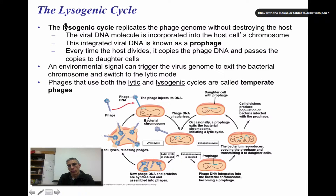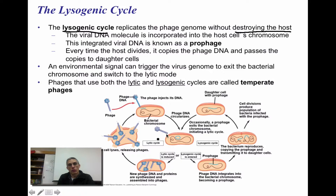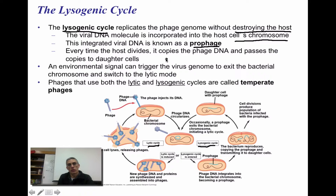The second type of cycle for these phages is called the lysogenic cycle. For these particular phages or viruses, they're going to replicate the phage genome, but they're not going to destroy their host. The viral DNA molecule is going to be incorporated into the host cell's chromosomes. This integrated viral DNA is going to be known as a prophage. Every time the host cell divides, it's going to copy the phage DNA and pass it on to the daughter cells produced during cell division.